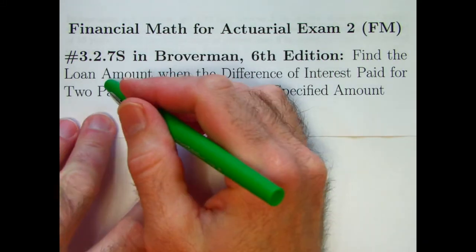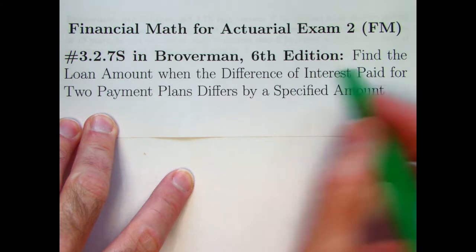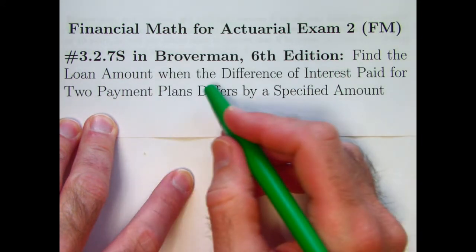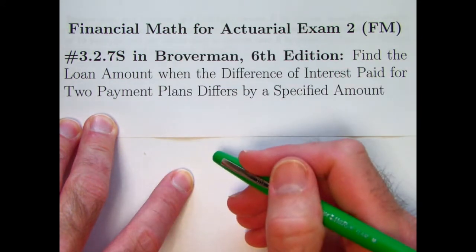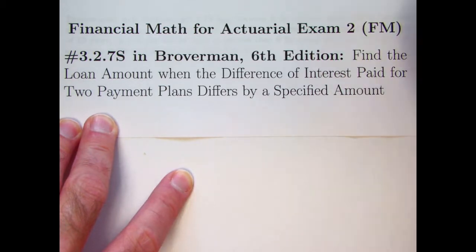Hi, in this video we'll solve problem 3.2.7s. We will be finding the loan amount when the difference of interest paid for two different payment plans for the loan differs by a specified amount.